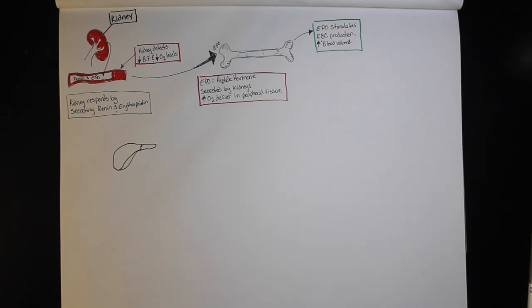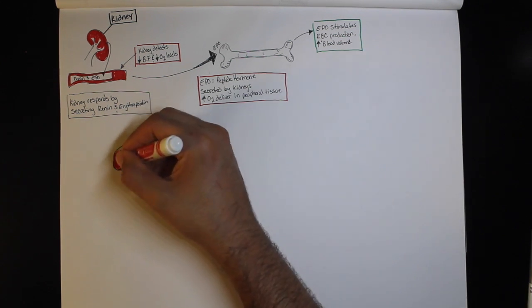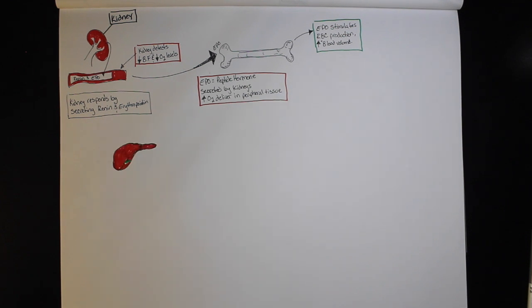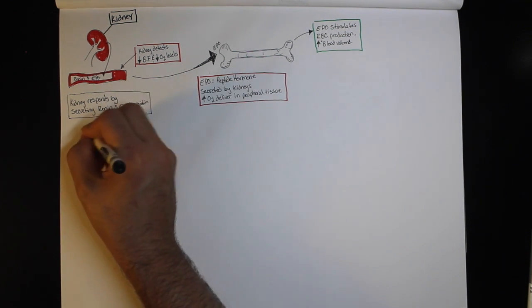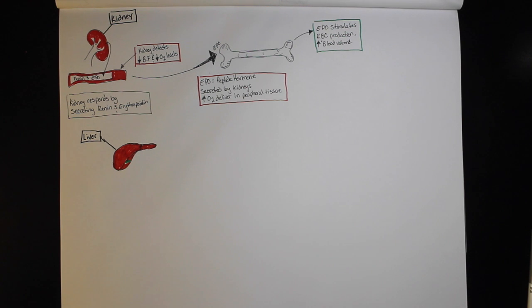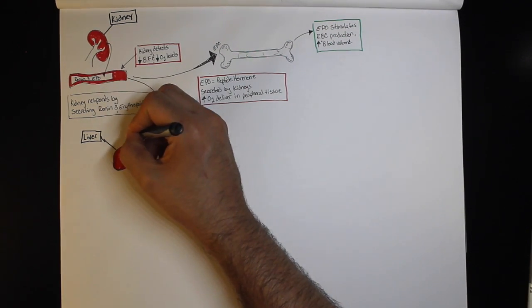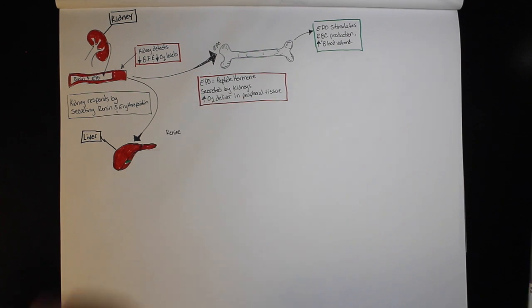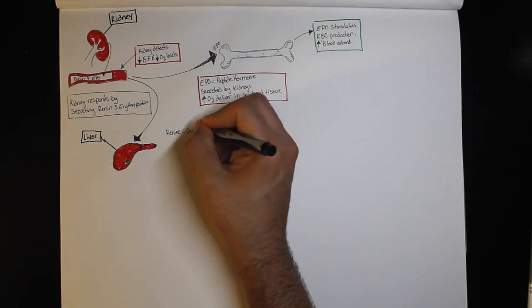The kidneys are also able to secrete an enzyme called renin. Renin is an enzyme with catalytic ability, secreted by specialized cells within the kidney called juxtoglomerular cells. Juxtoglomerular cells are involved with tubular glomerular control.